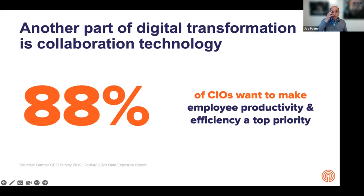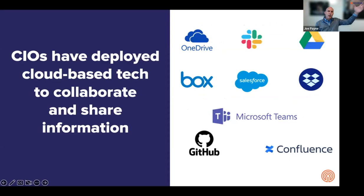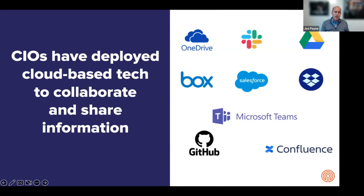At the same time we digitize data, we've also focused on employee productivity and efficiency. CIOs have put in all of these new tools to allow us to share, collaborate, and work together. We love using Slack or Teams or OneDrive. We love having our data in Salesforce where it's easily accessible, or in GitHub for our source code. Unfortunately, almost all of these products have personal versions that make it easy to move data from the corporate version to the personal version. All of these collaboration tools mean that we have data spread out all over the place. Fantastic tools, but they've really changed the playing field on data exfiltration.